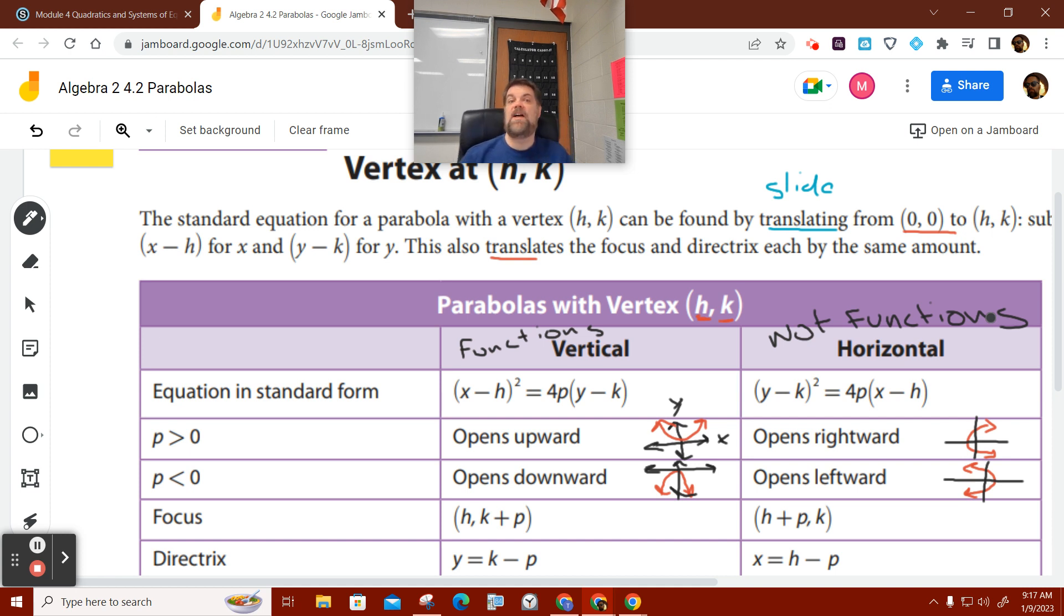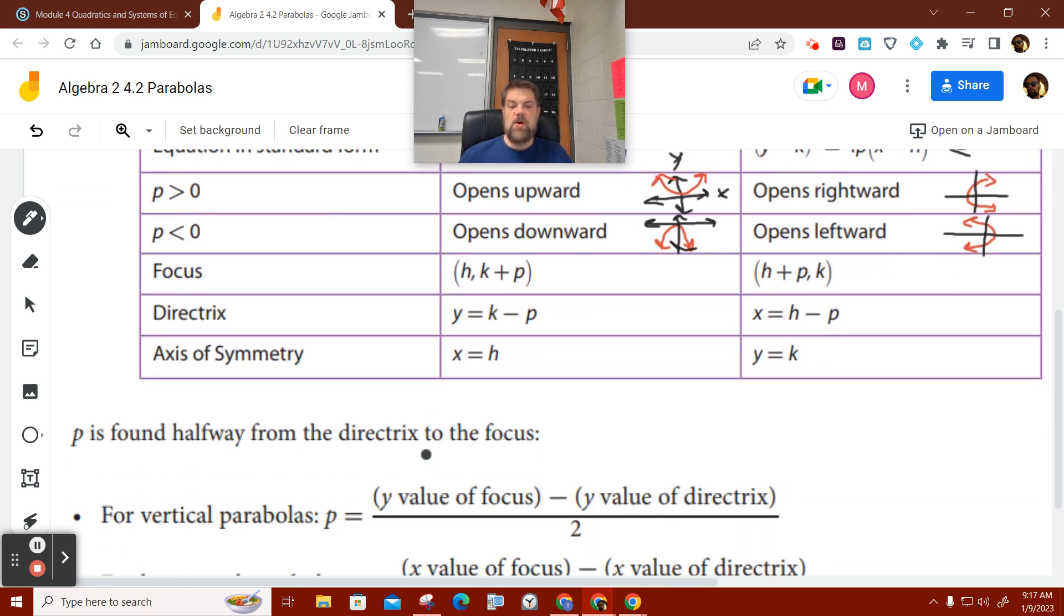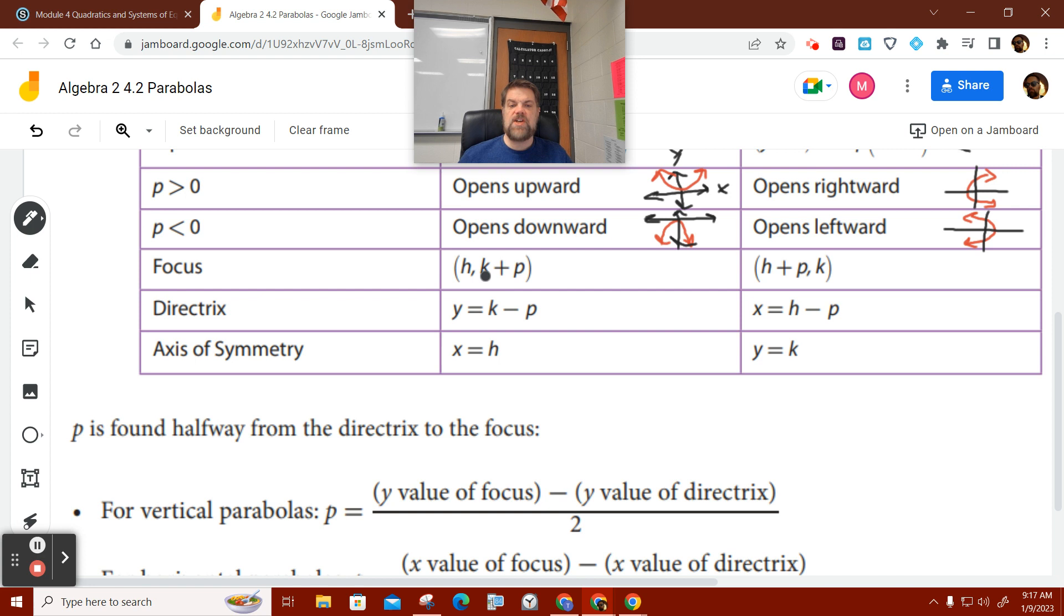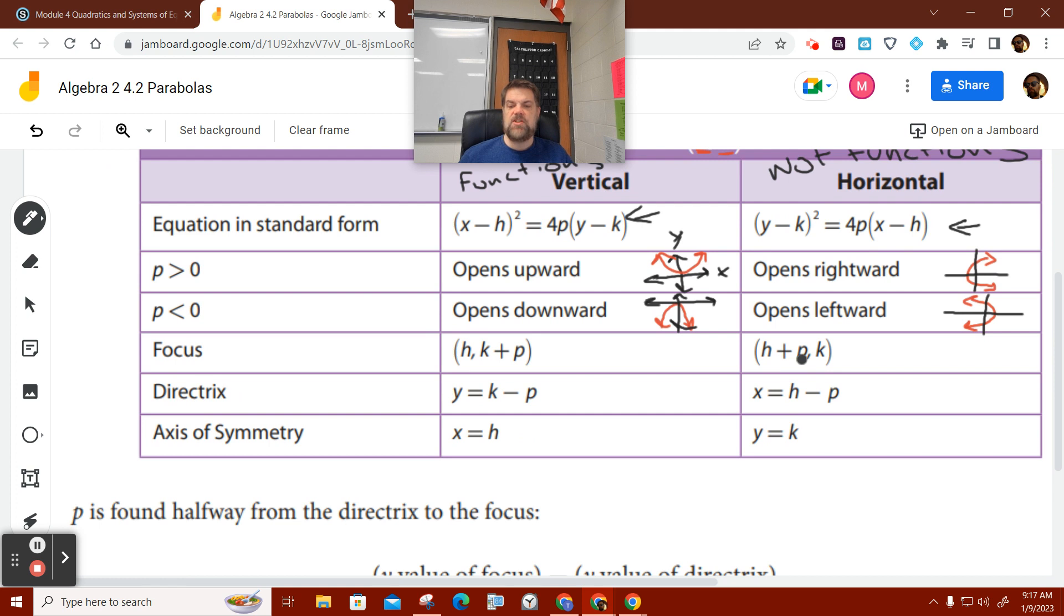So then the focus is located at, for a vertical, H comma K plus P. And then for a horizontal, it's H plus P comma K. The directrix for a vertical would be Y equals K minus P. And then X for a horizontal, X equals H minus P. And then for the axis of symmetry, X equals H. And for a horizontal, Y equals K.